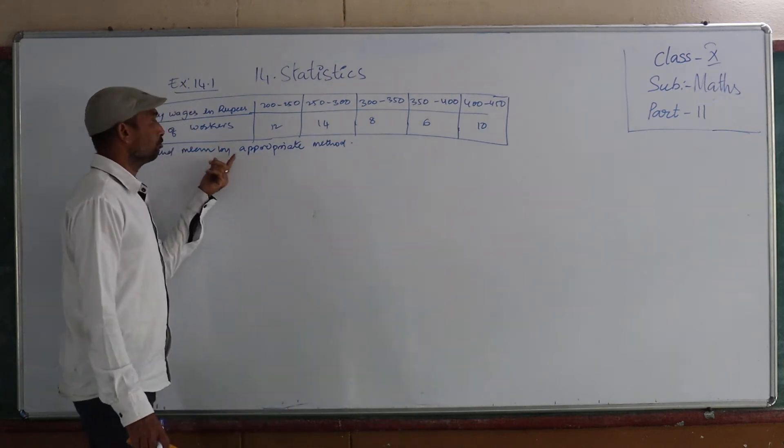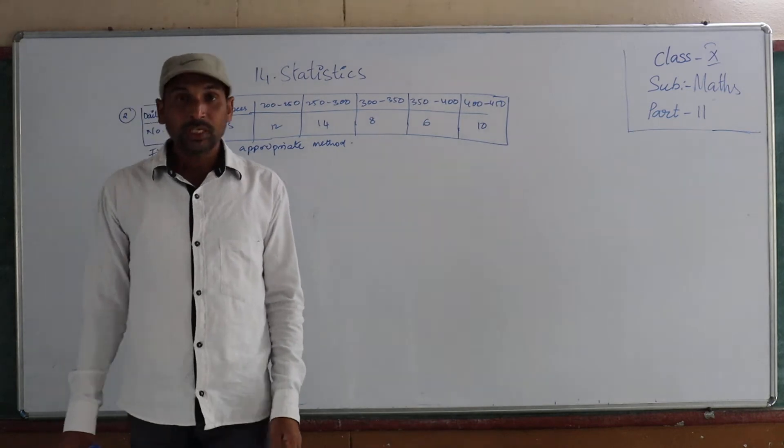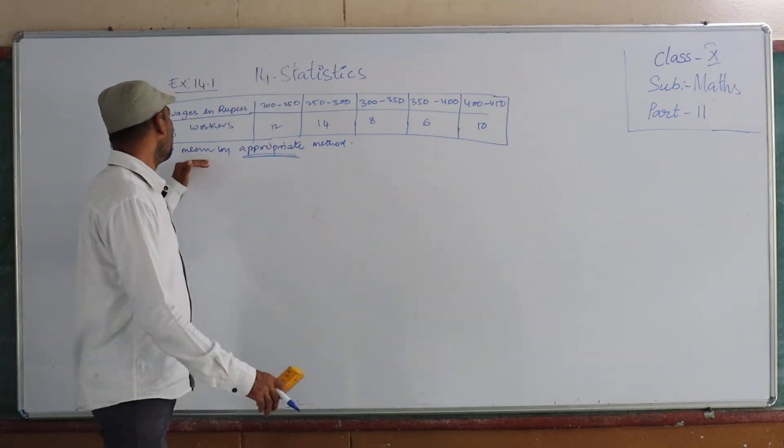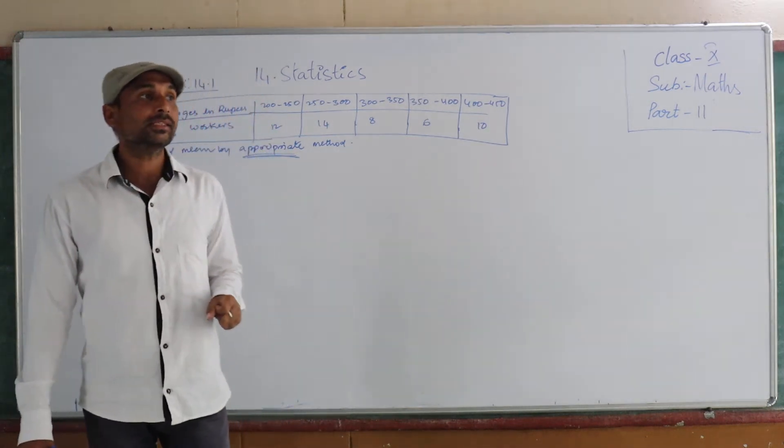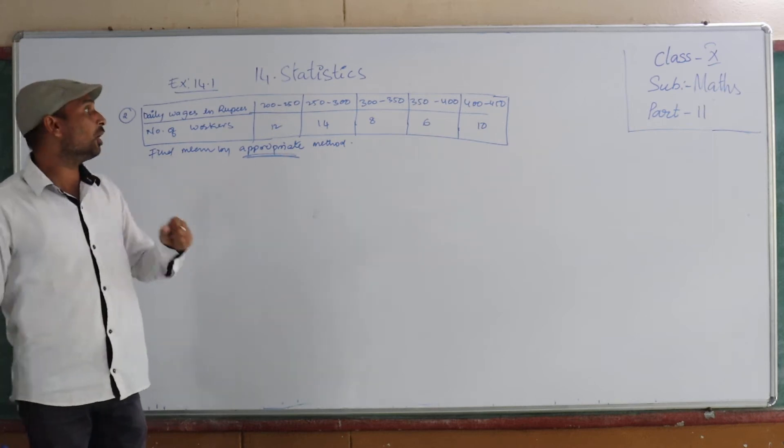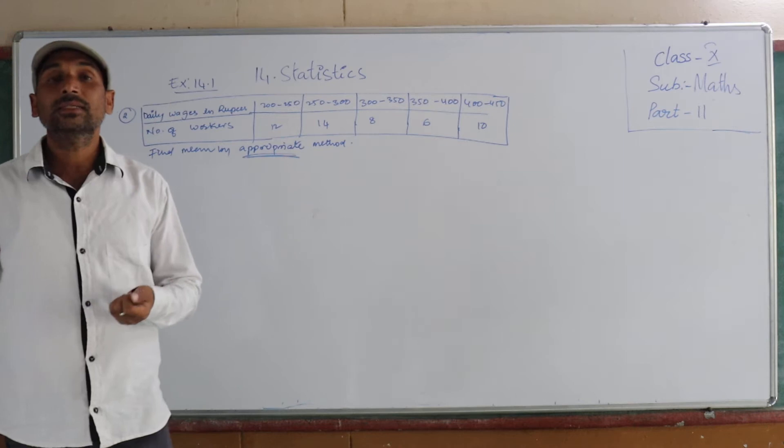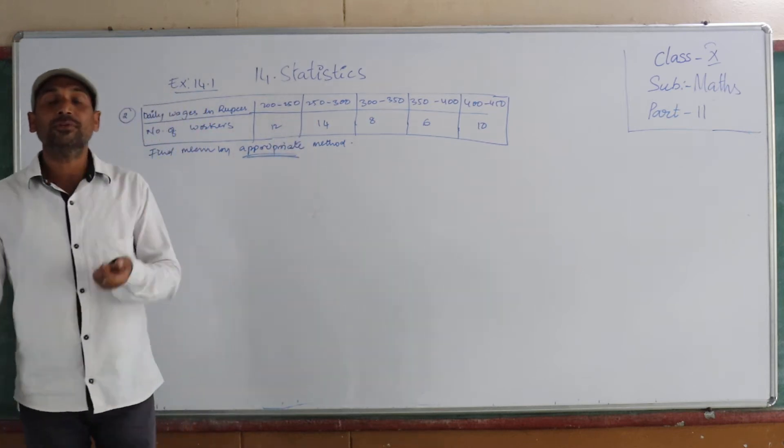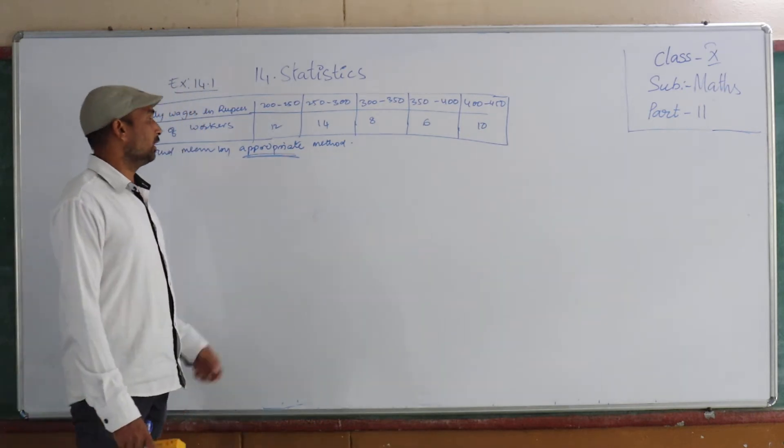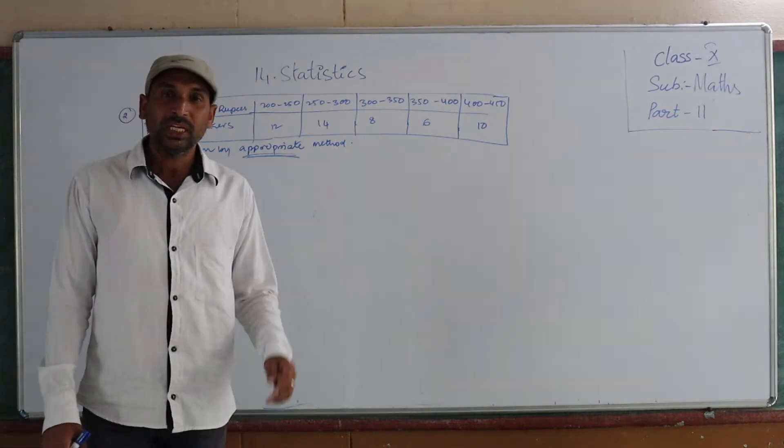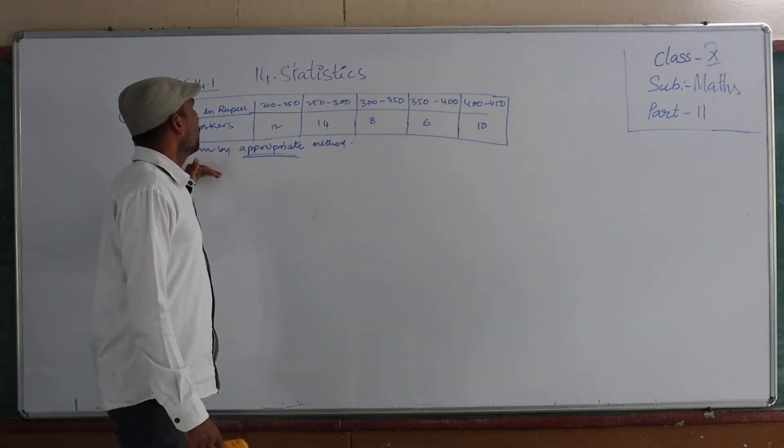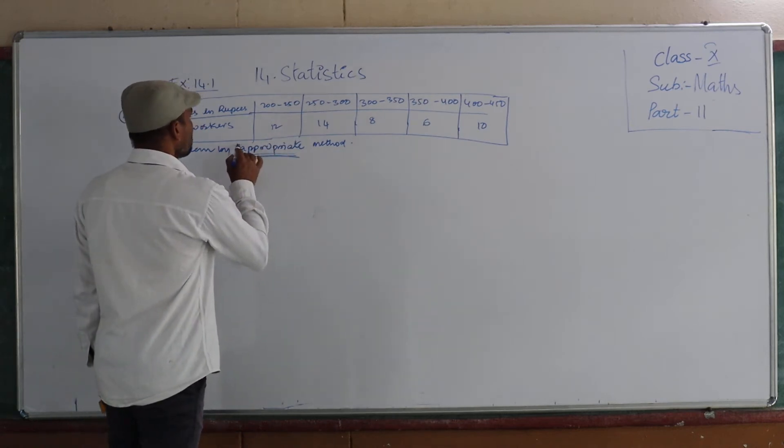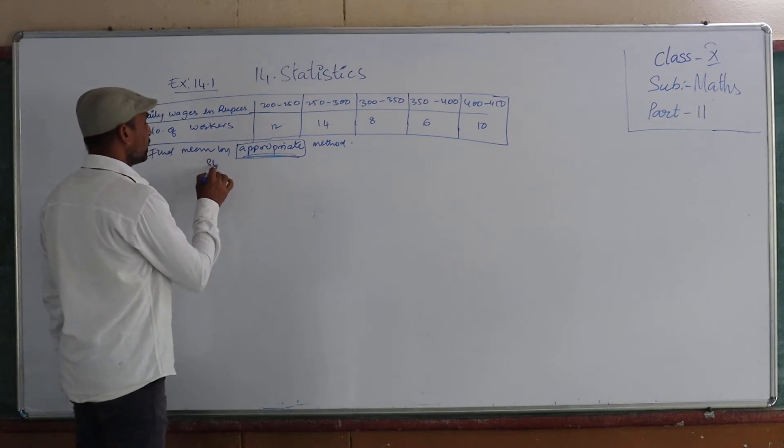And they are asking find mean by appropriate method. So why are they asking appropriate method? So appropriate method means to find out mean, we have three methods. In the three methods, which method is very suitable to find out this? That they are asking. So that means appropriate - which is very suitable to this? Then that method we have to take.